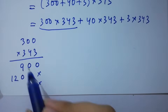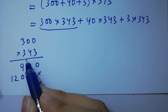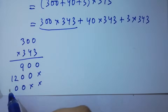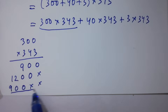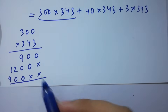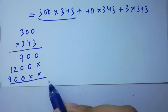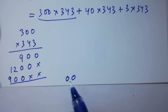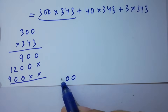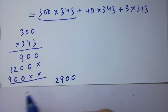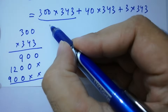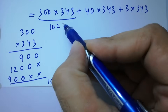3 times 0 is 0, 3 times 0 is 0, 3 times 3 is 9. Adding them up: we have 3, 0, then 0 plus 0 is 0, then 9 plus 0 plus 0 is 9, then 2 plus 0 is 2, then 9 plus 1 is 10. So 300 times 343 equals 102,900.